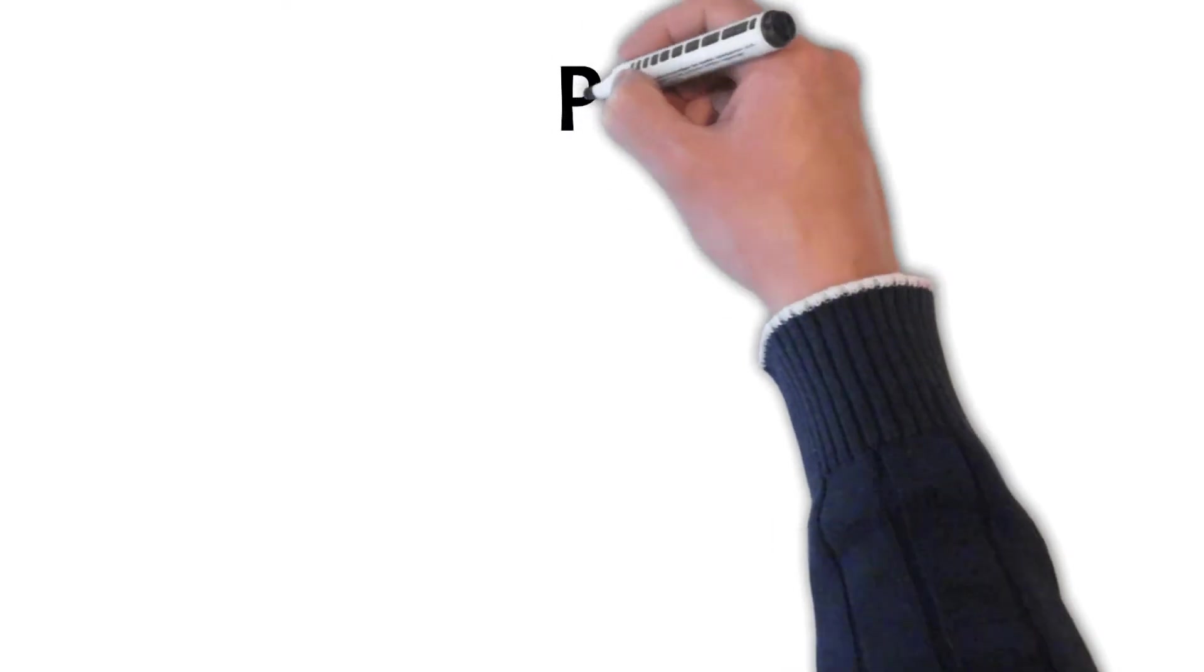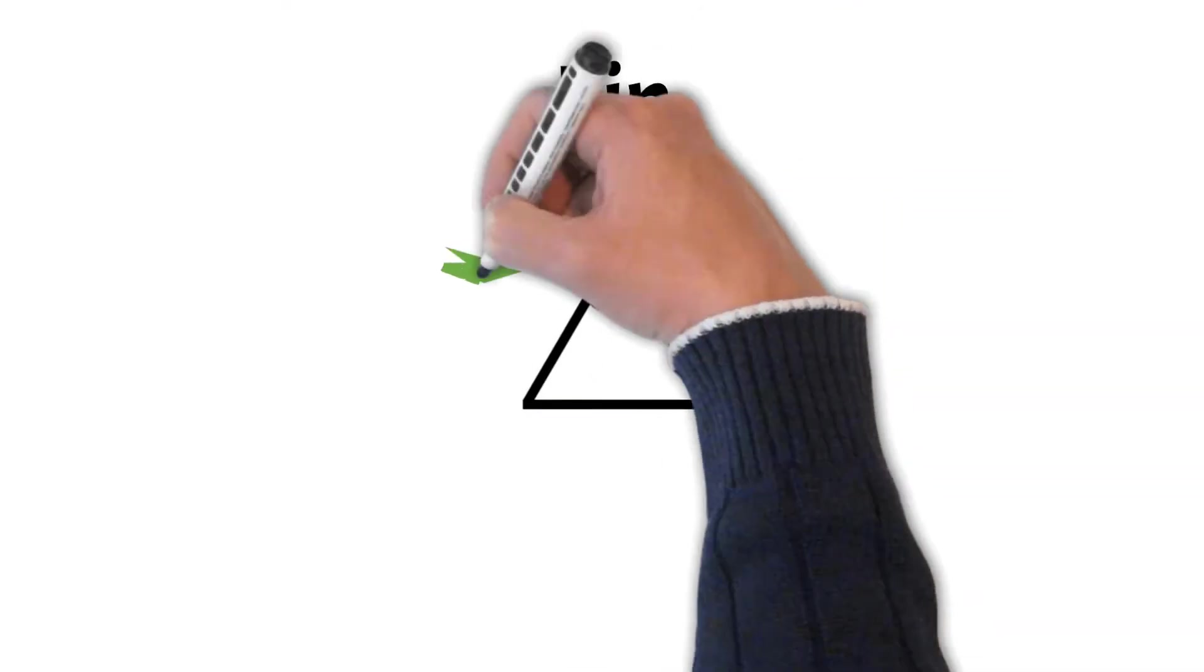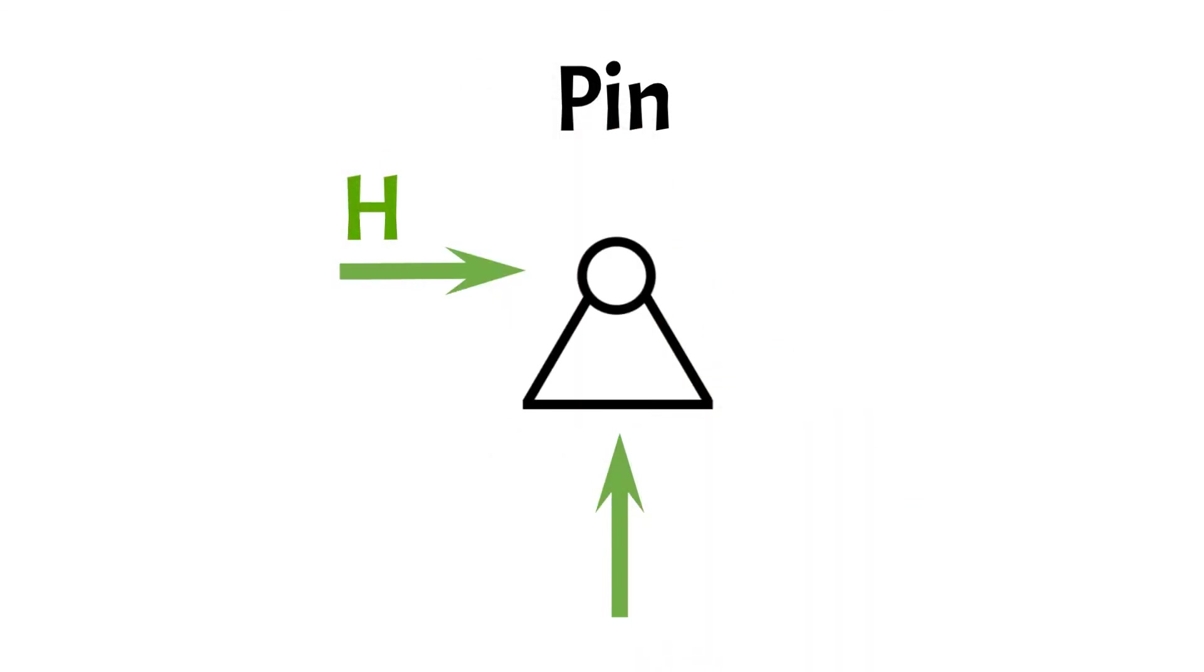The first type of support is a pin support. Pins have two reaction forces, a horizontal and a vertical, while they allow for rotation. This basically means that the moment at the pin support is zero.